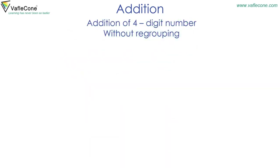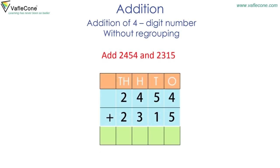Now, addition of four-digit numbers without regrouping. Add 2454 and 2315. Arrange the addends as per place value and start adding from the ones place.